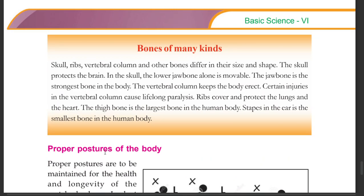Bones come in many kinds. Skulls, ribs, vertebral columns, and other bones differ in their size and shape. The skull protects the brain. In the skull, the lower jawbone alone is movable. The jawbone is considered the strongest bone in the body.